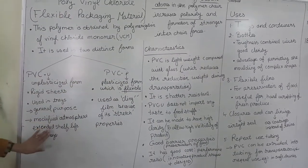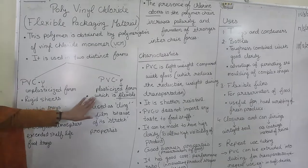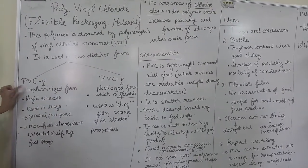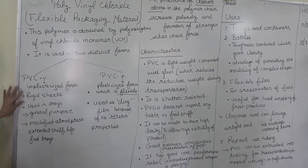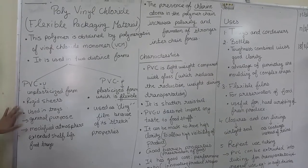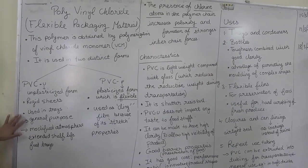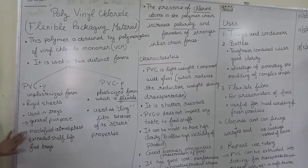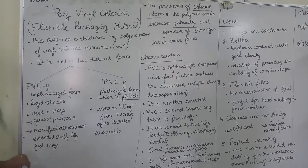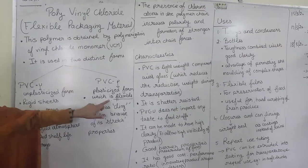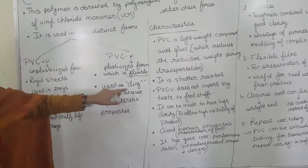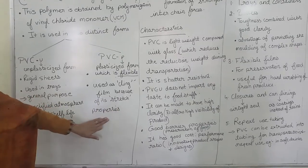The characteristics of each form can be distinguished as follows. The unplasticized form is a rigid sheet, and as such it can be used in trays — general purpose and modified atmosphere extended shelf life food trays. Whereas the plasticized form is flexible and can be used as a cling film because of its stretch properties.